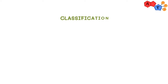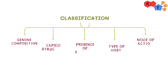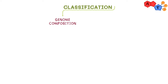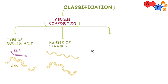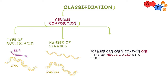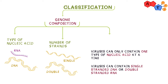Now how can we classify viruses? The main characteristics we use include genome composition, which can further classify a virus in three ways. The first is the type of nucleic acid: if a virus contains RNA it's called an RNA virus; if it contains DNA it's referred to as a DNA virus. Second, the number of strands — recall that viruses can only contain one type of nucleic acid at a time. You've heard of double-stranded DNA and single-stranded RNA, but what's special about viruses is that they can also contain single-stranded DNA or double-stranded RNA.